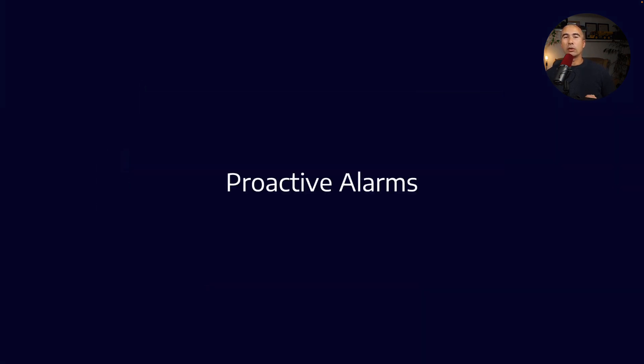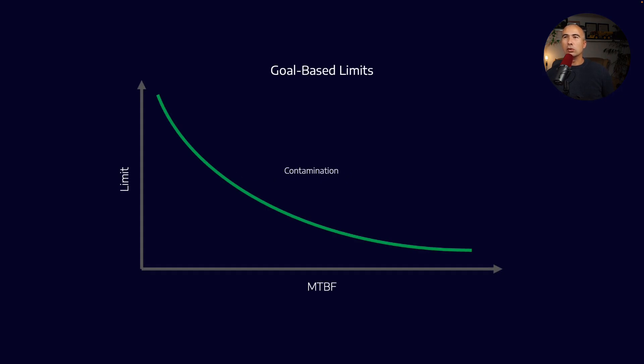So let's start by talking about what we might call proactive alarms. These are what we might call goal-based limits. An example that I gave was contamination. That is an example of a proactive measure that we're trying to take is contamination control.